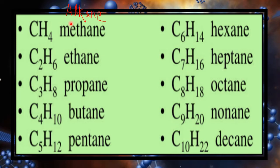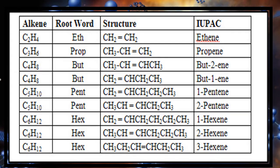The first homologous series is alkanes. As the spelling indicates, it has '-ane' as the suffix, used throughout the entire series. The members are: methane, ethane, propane, butane, pentane, hexane, heptane, octane, nonane, decane. The general formula followed by alkanes is CnH2n+2.